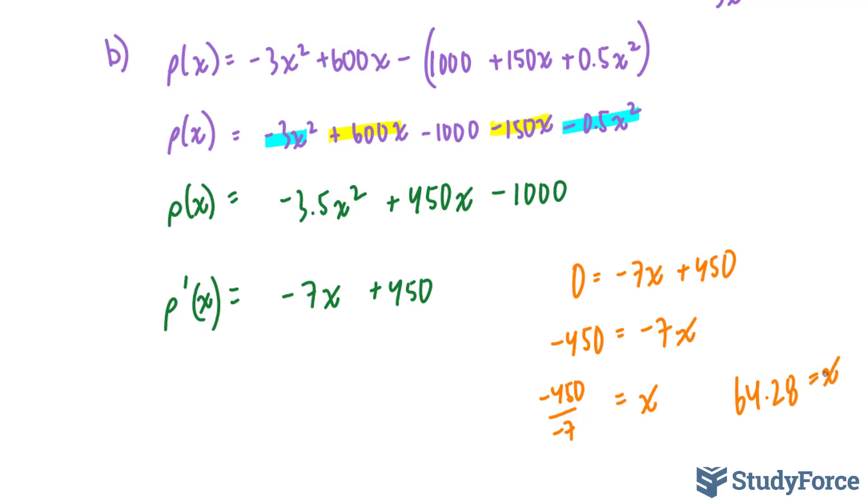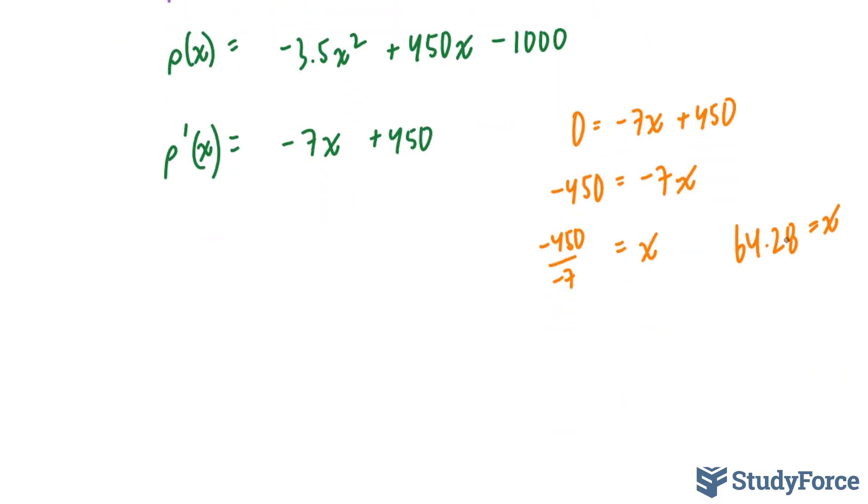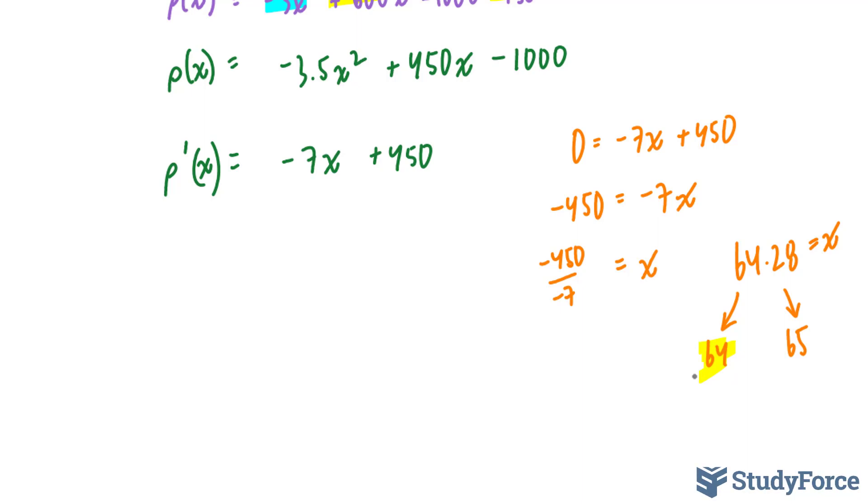So what does this number represent? 64.28 represents the number of USB devices created. Now, since you can't have 0.28 of a USB device, you can either use 64 or 65. It is totally up to you. So for the rest of this problem, I'm going to use 64. But by all means, you can use 65.